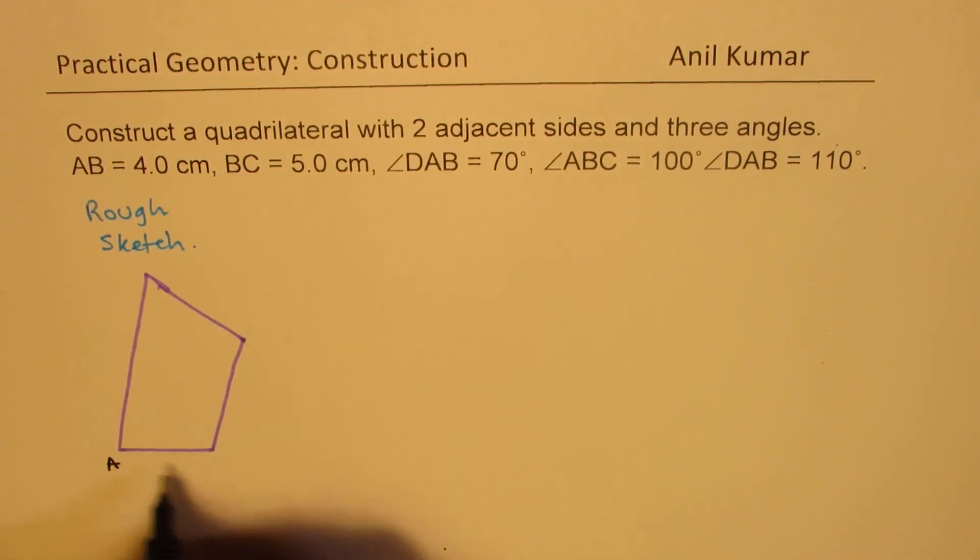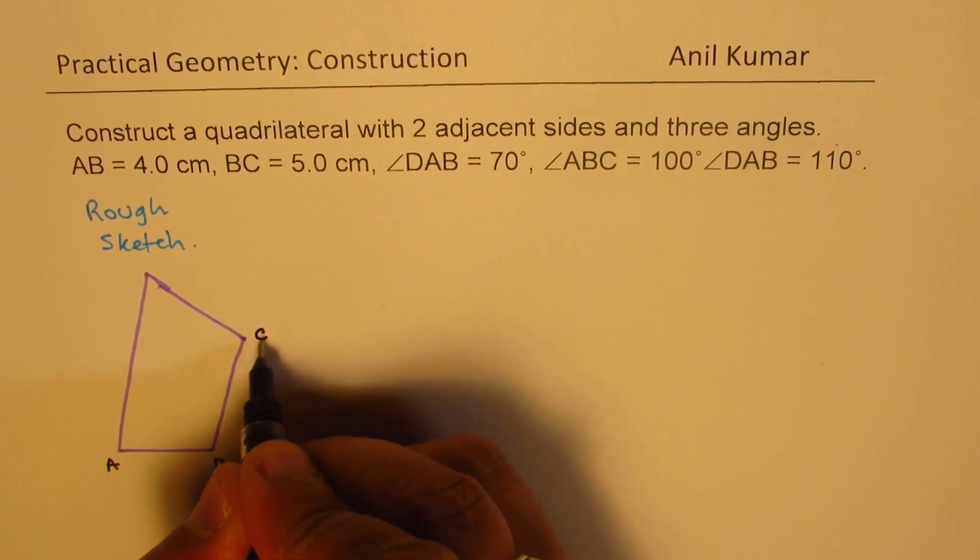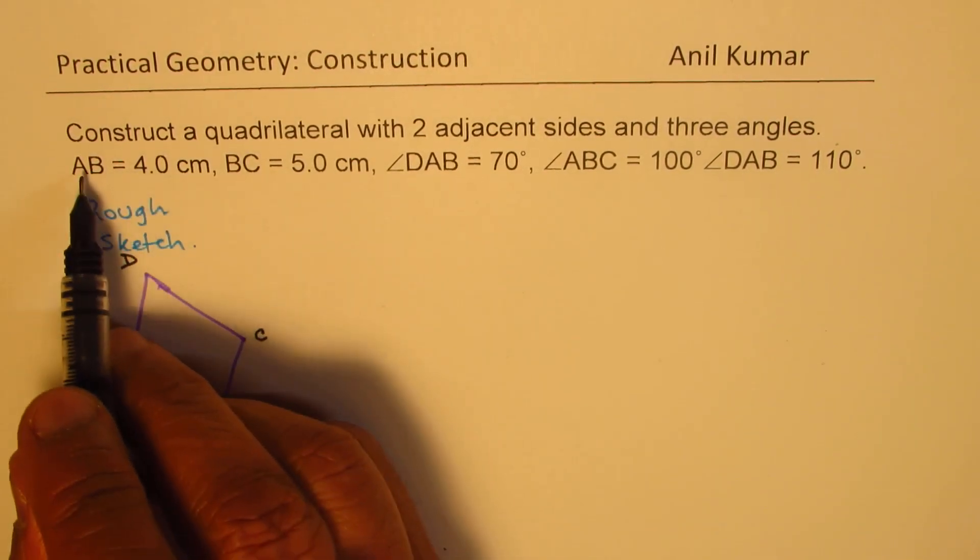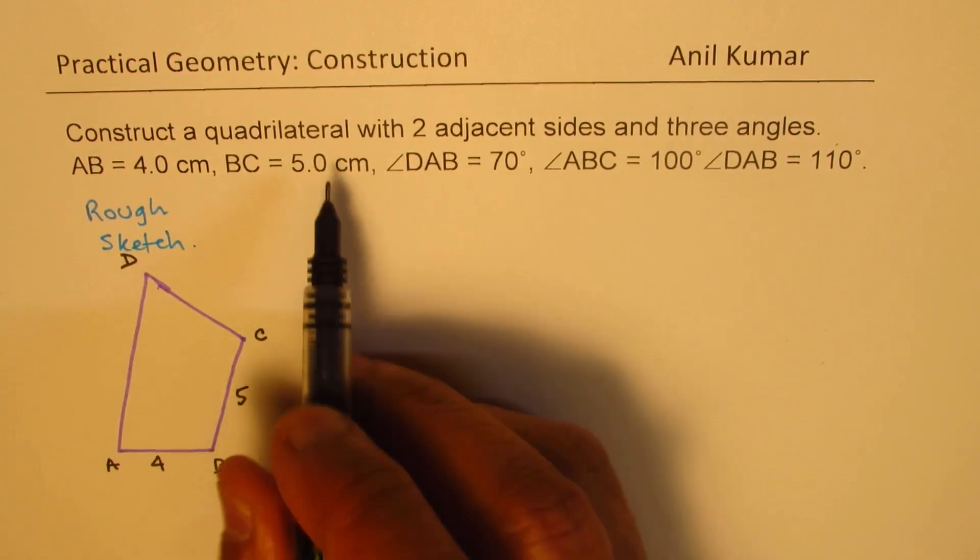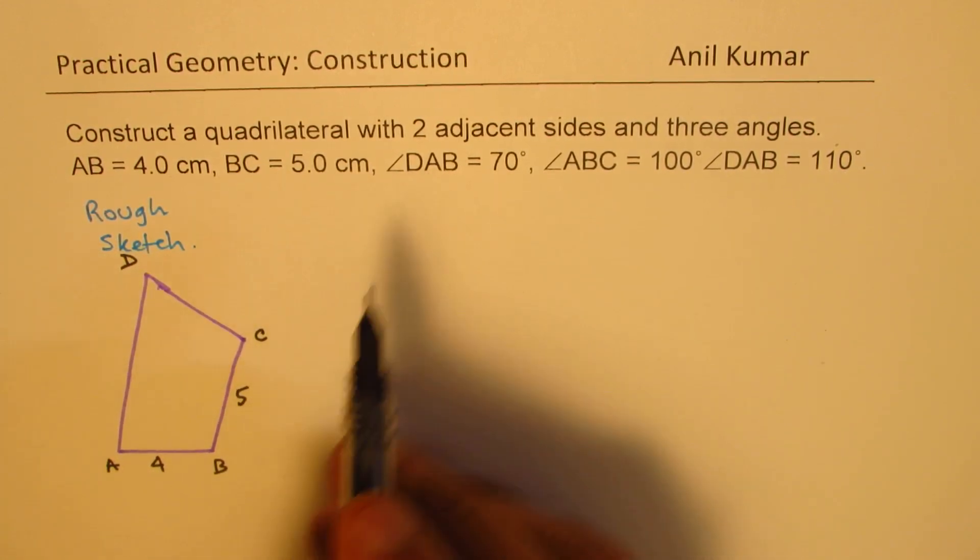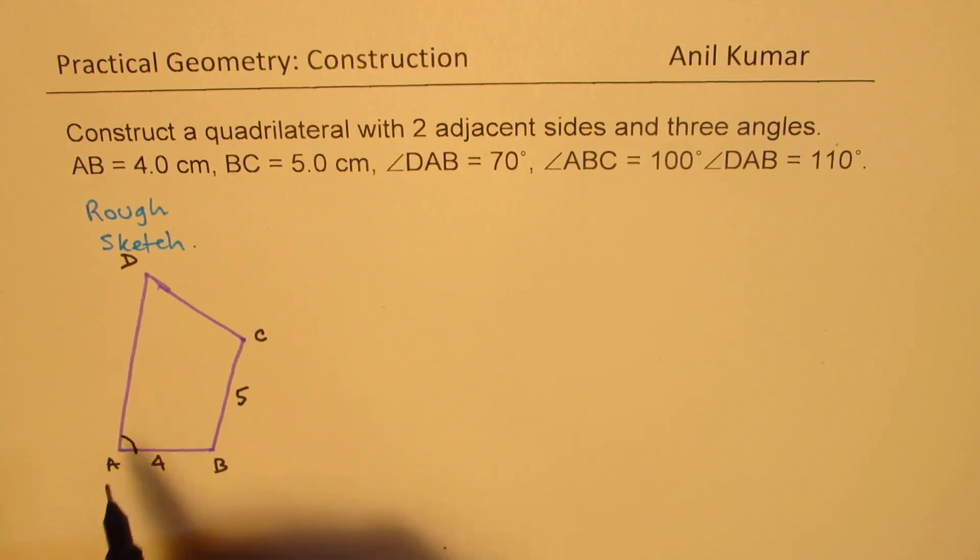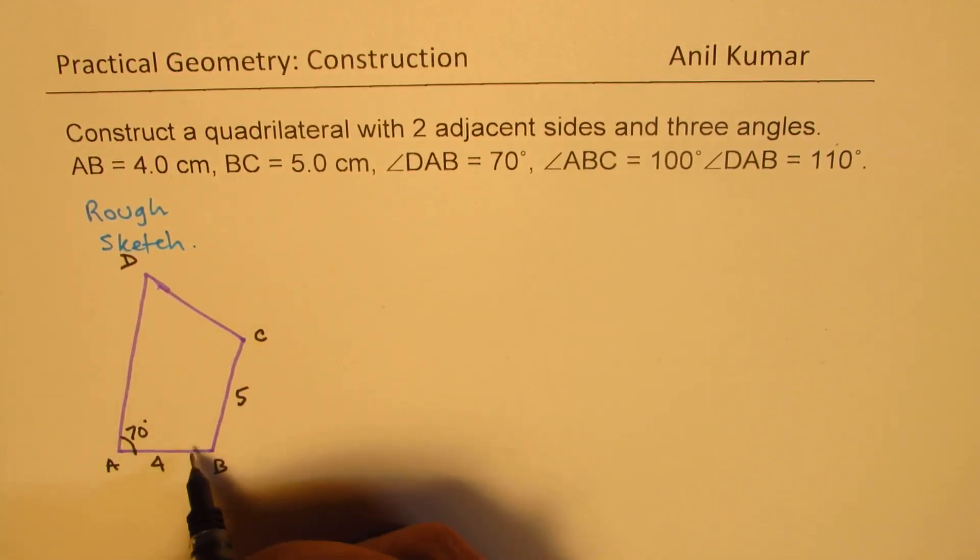We are given, let's say this is ABCD. We are given AB as 4 units, B to C as 5 units, angle DAB, this angle is given to us as 70 degrees, ABC, this angle is given to us as 100 degrees.